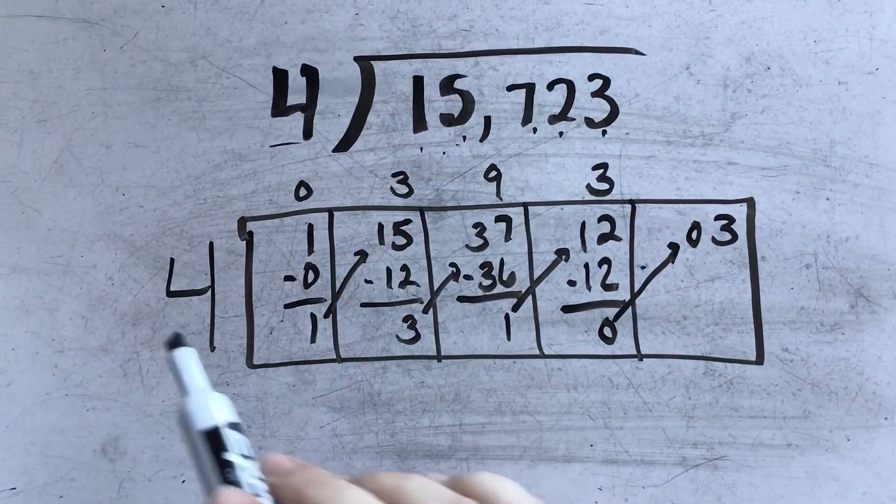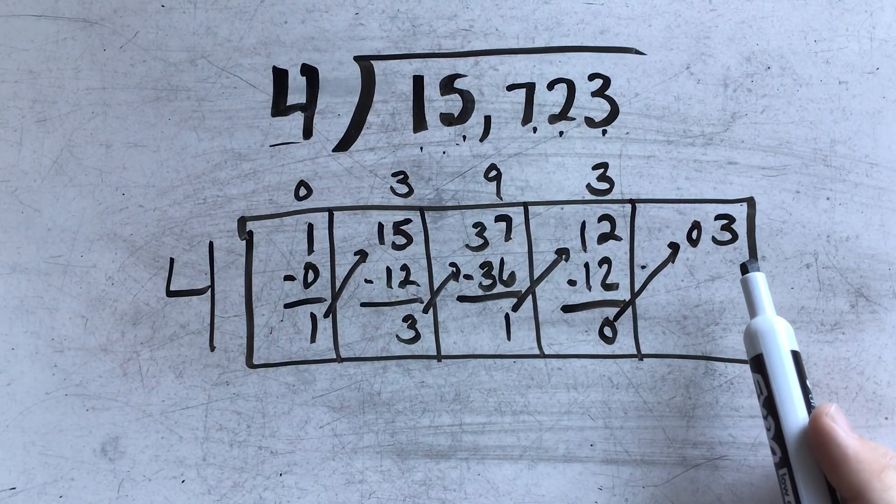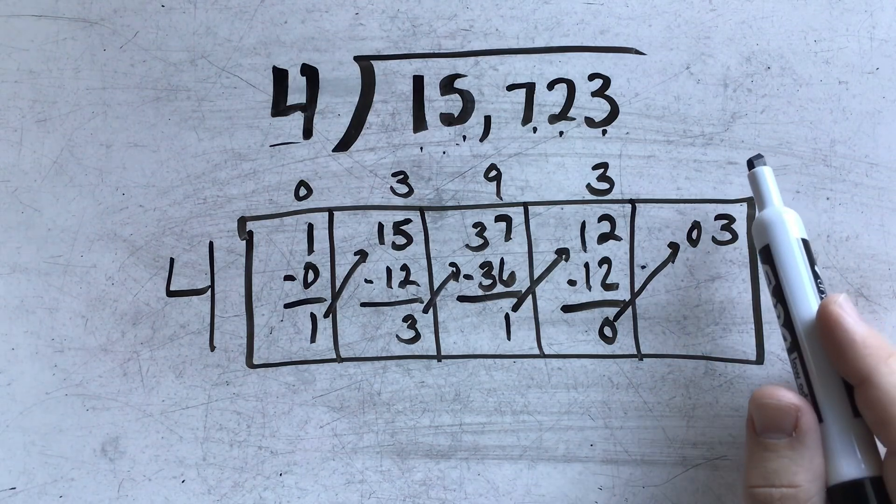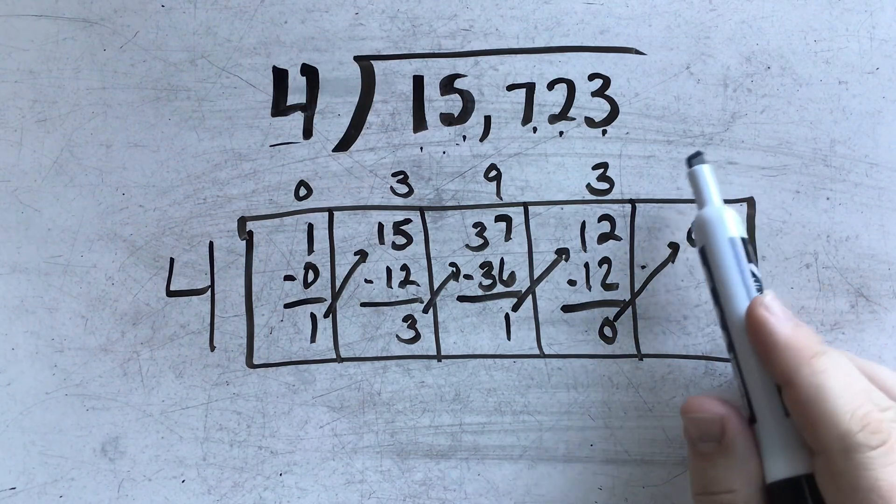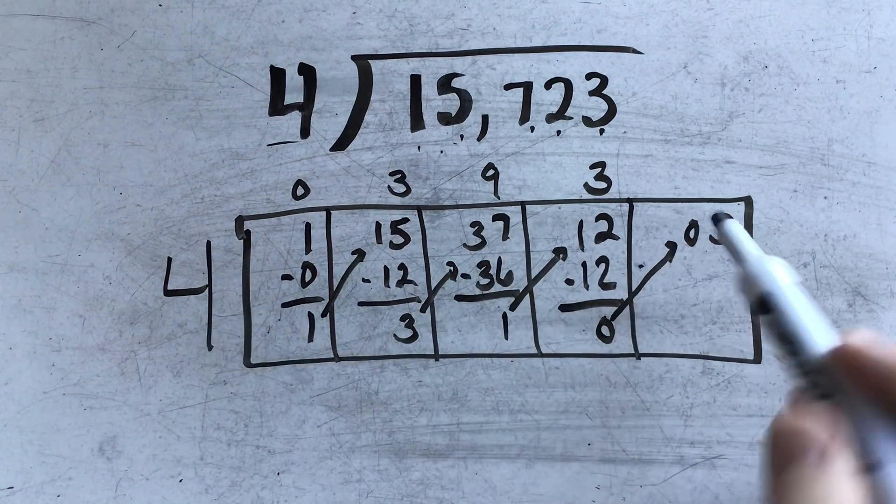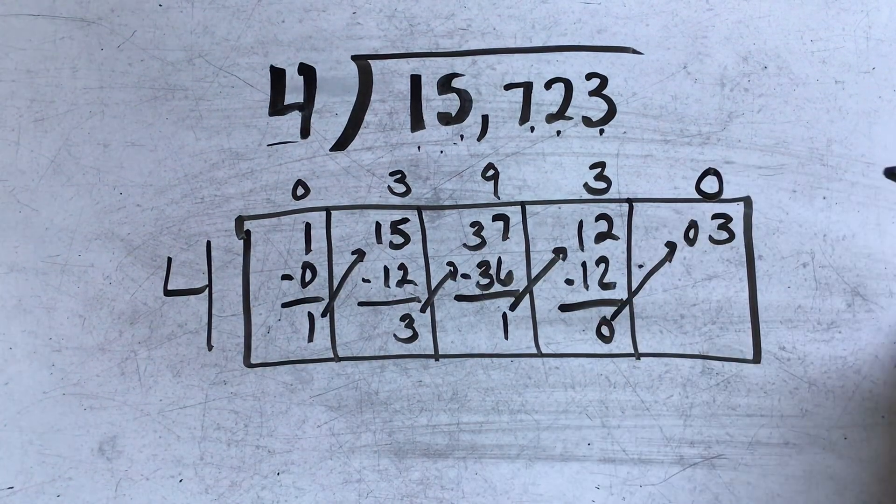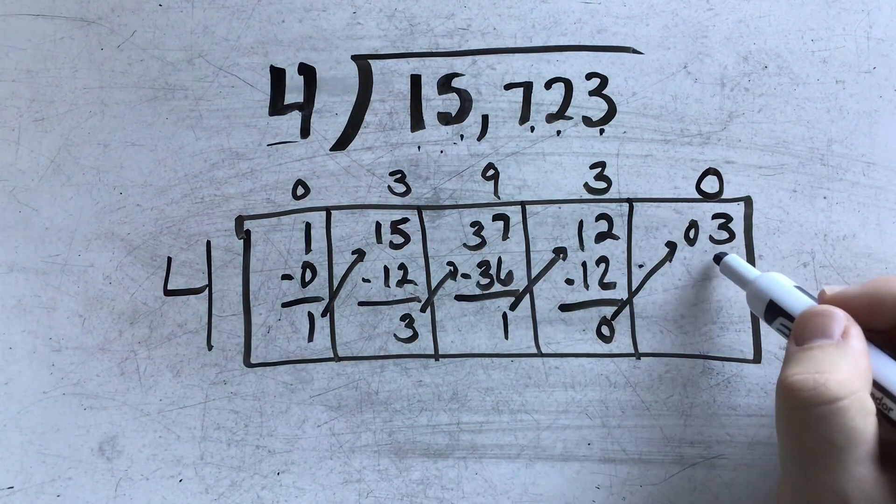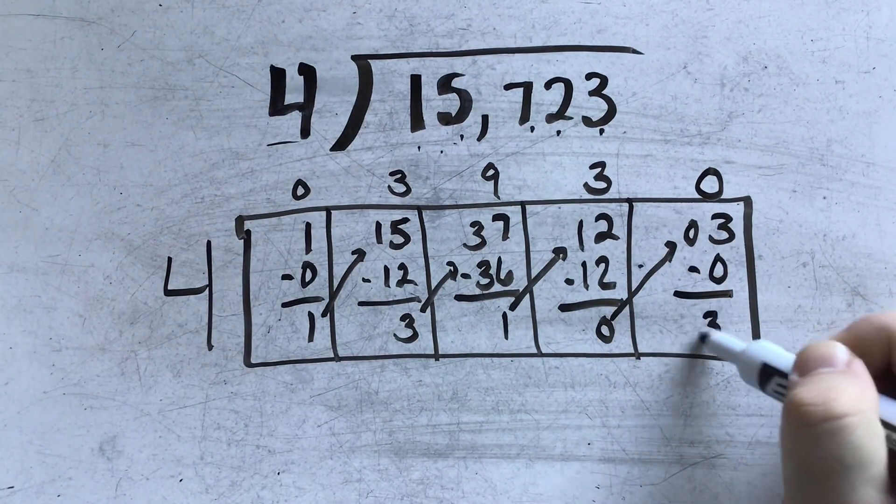And now I come to this last problem of 4 going into 3. A lot of students sometimes want to bring that 3 up and just say it's my remainder. But we have to make sure that we include the division part. So 4 divides 3 0 times. And that 0 is important in my answer. 0 times 4 is 0. And there's still 3 left over.